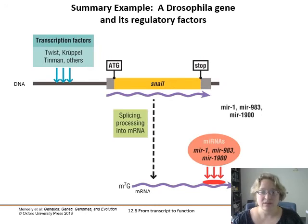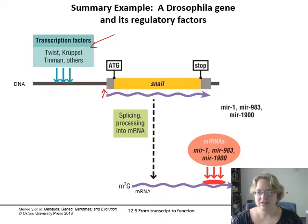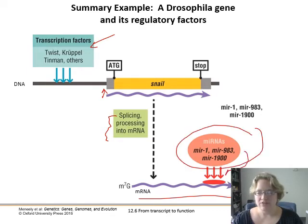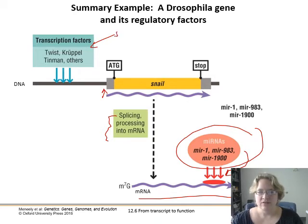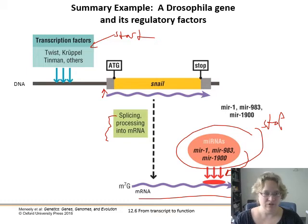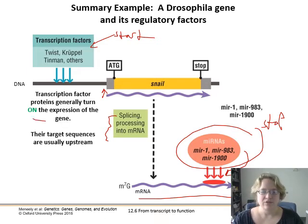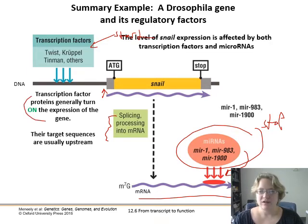Here's an example: the Drosophila gene snail. We've got transcription factors that help promote transcription, and here's the mRNA — the transcriptional start site, goes through, transcribes, gets spliced and processed into mature mRNA. But then there are a bunch of microRNAs that grab onto the tail and try to get it destroyed by exonucleases in the cell. So we've got a whole lot of things saying start, and a whole lot of things saying stop, creating a balance so that enough transcripts are produced but not so many as to overtax the cell's molecular metabolism.